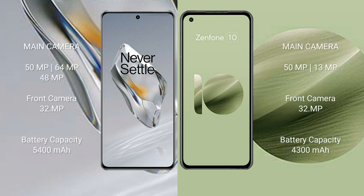The OnePlus 12 features a triple rear camera setup of 50MP plus 64MP plus 48MP, and a 32MP front camera. The Asus Zenfone 10 features a dual rear camera setup of 50MP plus 13MP, and a 32MP front camera. The OnePlus 12 has a 5400mAh battery with 100W fast charging, while the Asus Zenfone 10 has a 4300mAh battery with 30W fast charging.